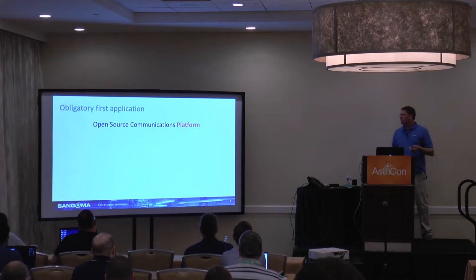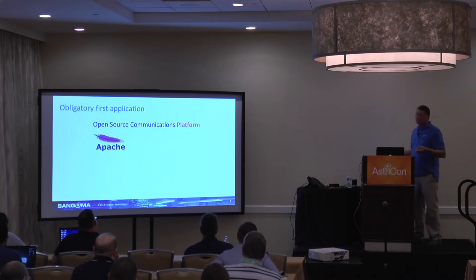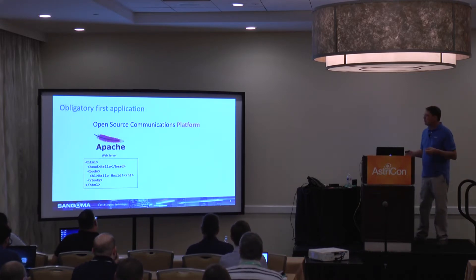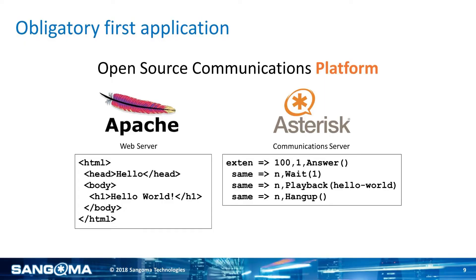Let's look at a simple application using Asterisk. First, let's look at a simple application using Apache - Apache is an open source web server, Asterisk is an open source communication platform. Here's a simple Hello World written in HTML that Apache can serve up. Similarly, we can write a communication application using the Asterisk Dial Plan that will play back Hello World. When you dial extension 100, it'll answer the call, wait a second, play back Hello World, and then hang up.